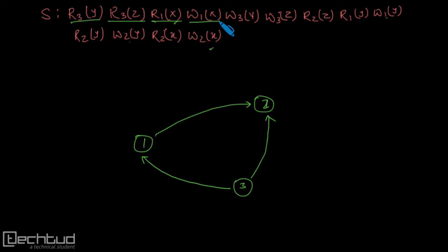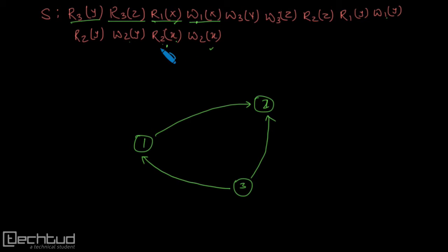Now let us check for w1x on x. This will also be from 1 to 2 because these two operations are conflicting. From 1 to 2 I will draw an edge — but I already have an edge. So this is done. These two are also conflicting but again 1 to 2, which I already have.